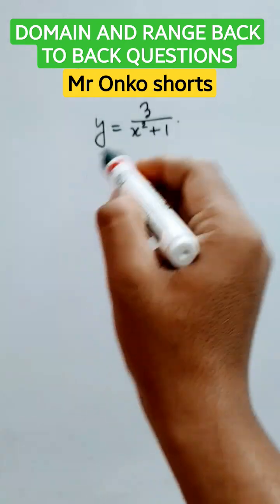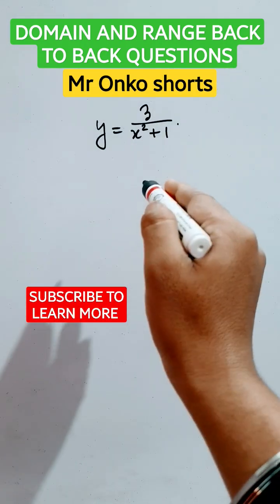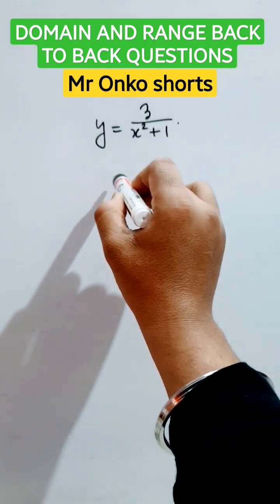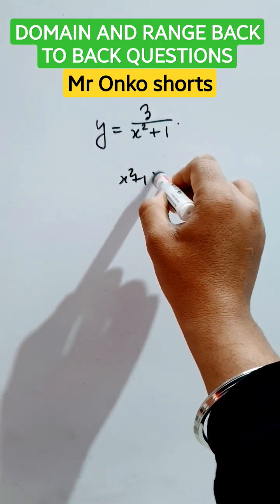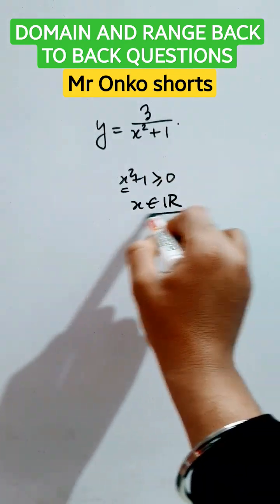First of all, the denominator part can't be equals to zero, it is greater than equals to zero. For all values of x, since it's a square, so x belongs to real numbers. For all values of real numbers x, it's applicable, so this is the domain.